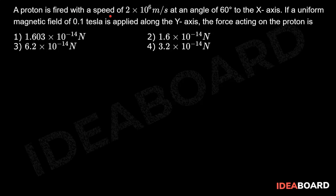A proton is fired with a speed of 2×10⁶ m/s at an angle of 60° to the x-axis. If a uniform magnetic field of 0.1 tesla is applied along the y-axis, the force acting on the proton is.